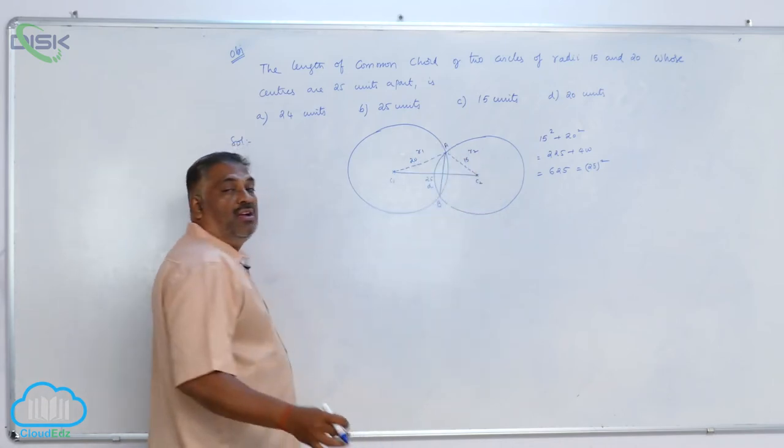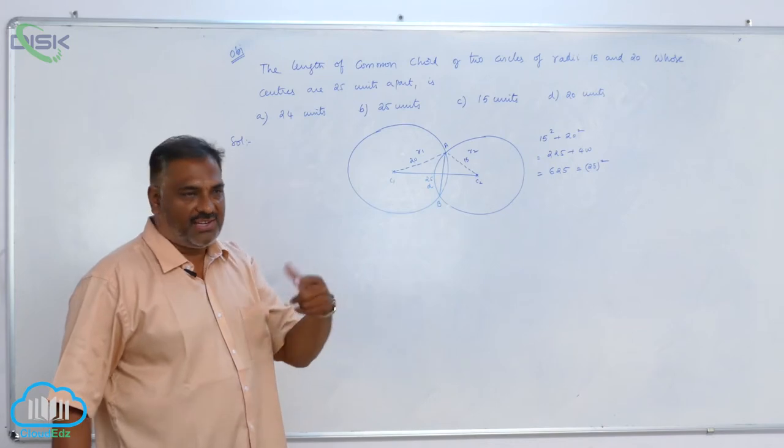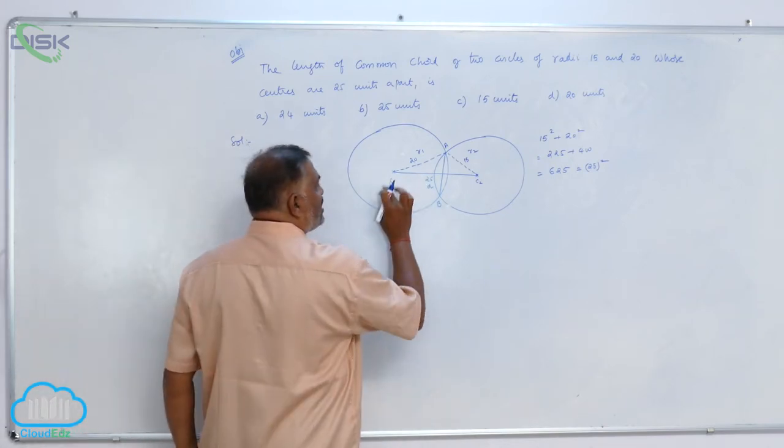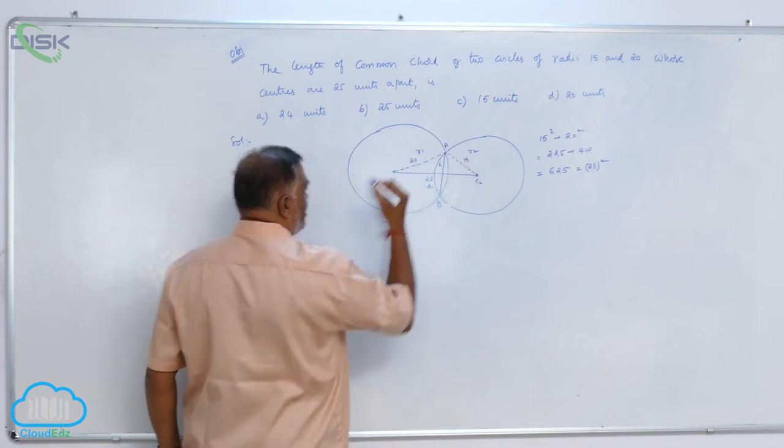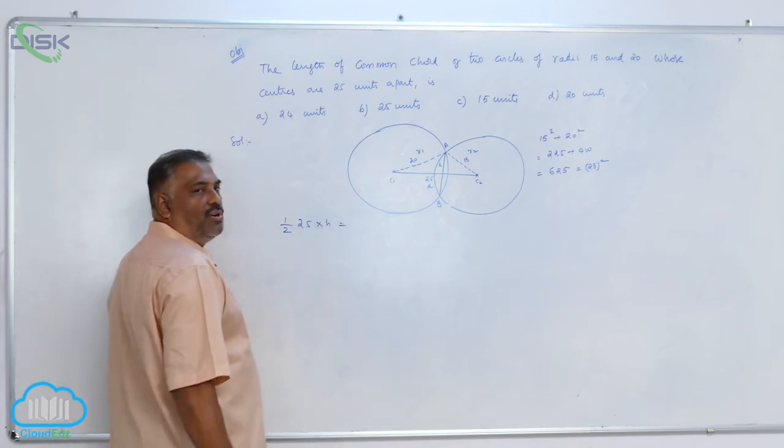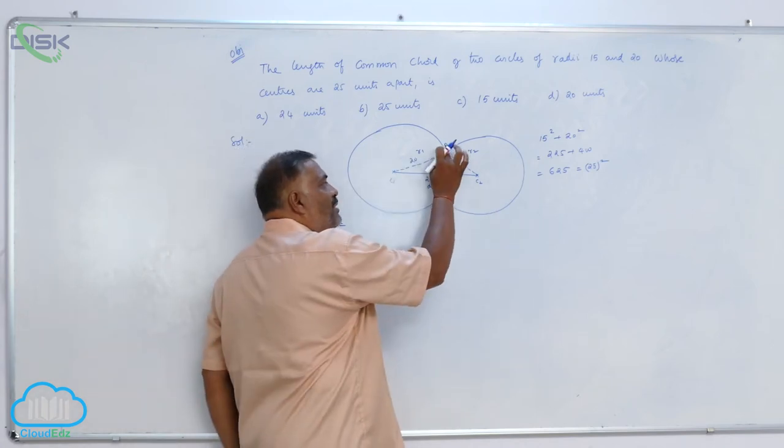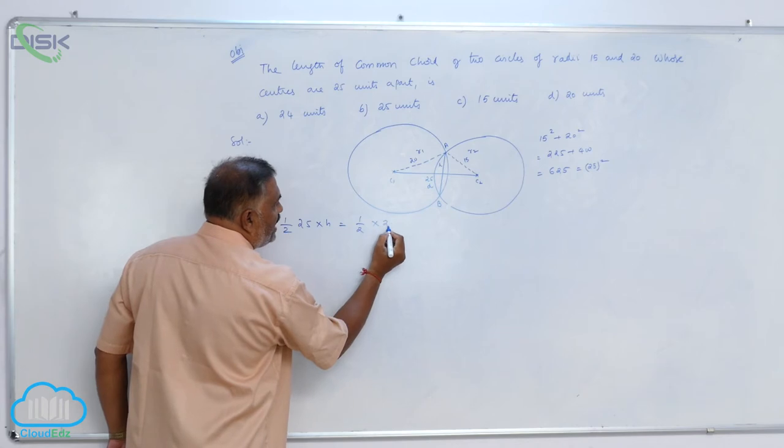In a right angled triangle, what is the area of the triangle? Half into base into height. Half into what is the base? If this is base, this will be height H. Half into 25 into H is equal to, since it is a right angled triangle, if this is the base, this will be the height, that is half into 20 into 15.